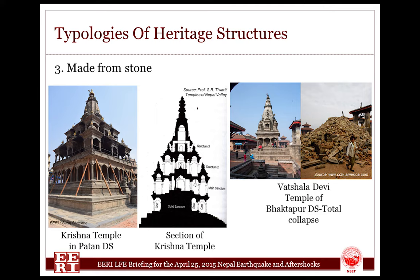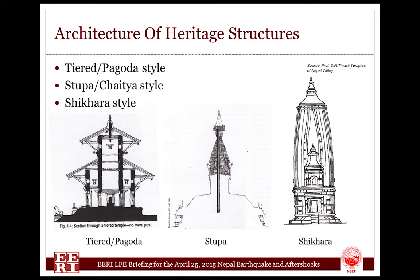In terms of architectural pattern, Nepalese temples can be broadly classified into three groups. The first group is the tiered temple, similar to pagoda style, having one roof, two roofs, three roofs or five roofs, with diminishing dimensions as it goes up. There is no four-roof temple. It has wide eaves supported by carved wooden struts.